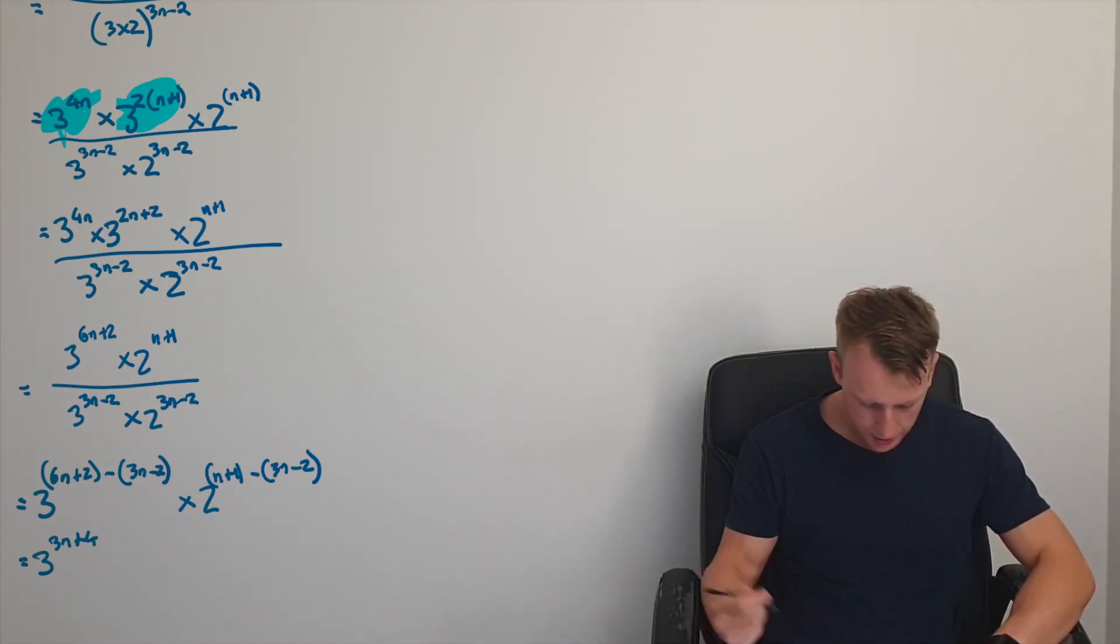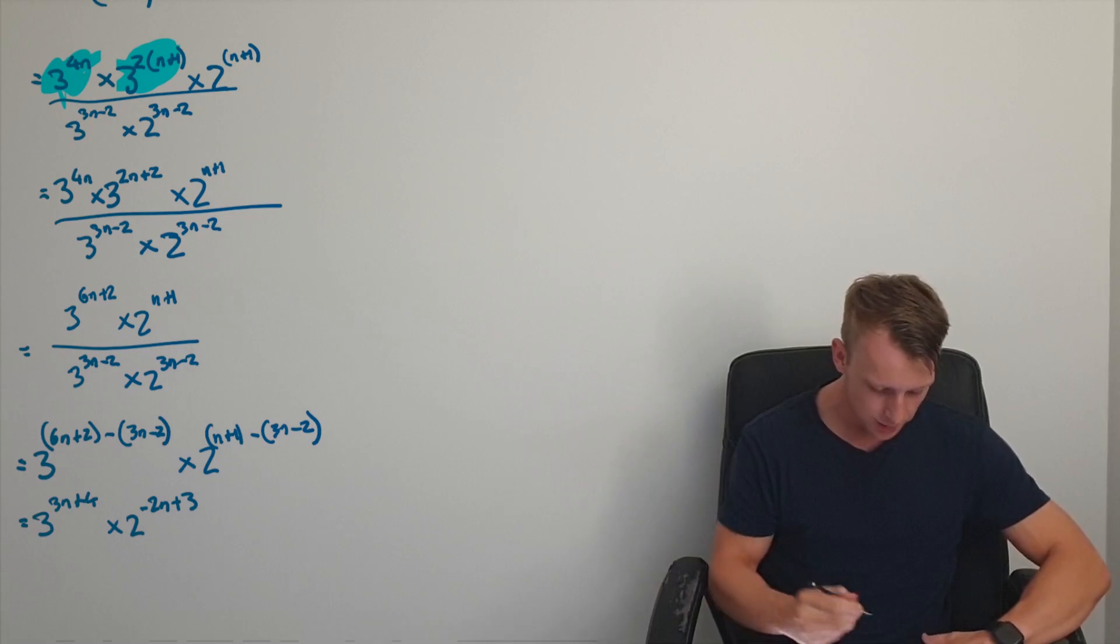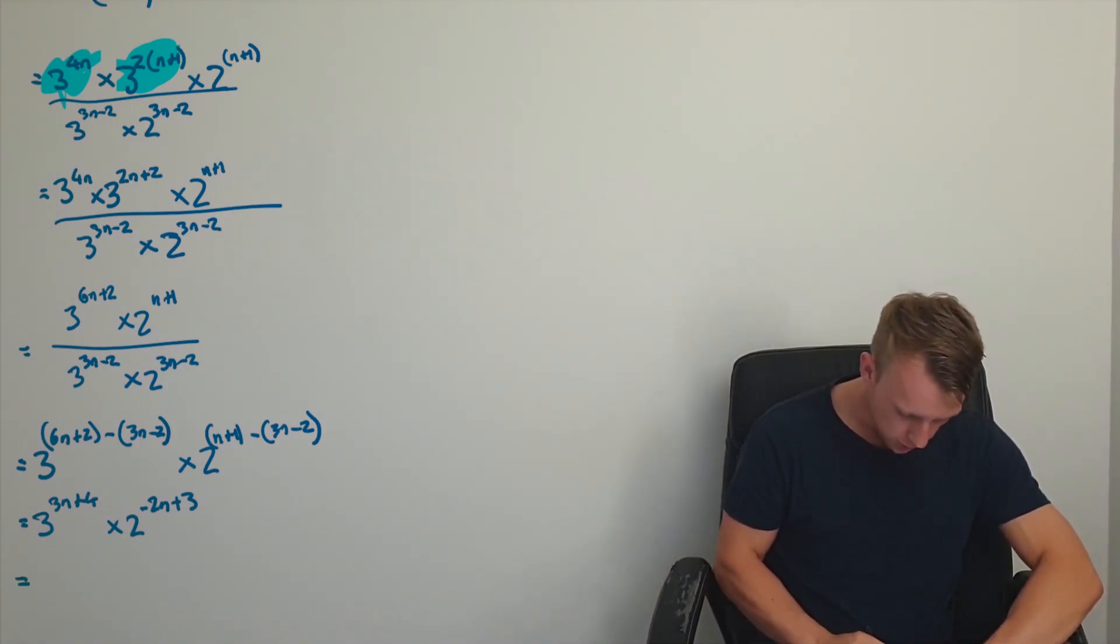That's going to become 3 to the power of 3n plus 4, because it's minus negative 2, and then multiply by 2 to the power of negative 2n plus 3. All right, last little thing that we probably could do is we'd probably just write it as 3 to 3n plus 4 multiplied by 2 to the power of 3 minus 2n.